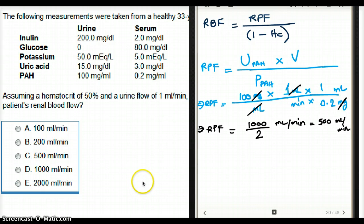Okay? So that's our renal plasma flow. Now that we have renal plasma flow, let's find the renal blood flow.